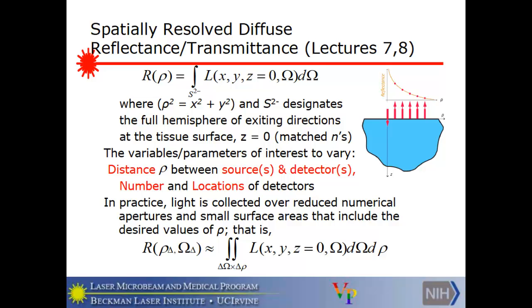The function R is called the reflectance as a function of rho, which is the distance between the sources and the detectors. Here I'm showing a single source and multiple detectors. And I'm trying to get a spatial resolution from that. Rho here is the sum of squares of x and y. So it's the square of the radius of the circle. S2 with a minus sign is the unit sphere, but only half of it. It's the hemisphere of exiting directions, since we normally think of the plus sign as z increasing down here.